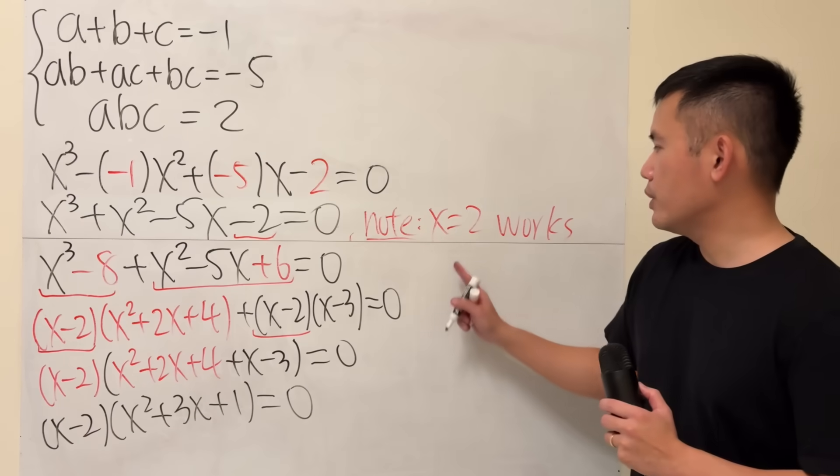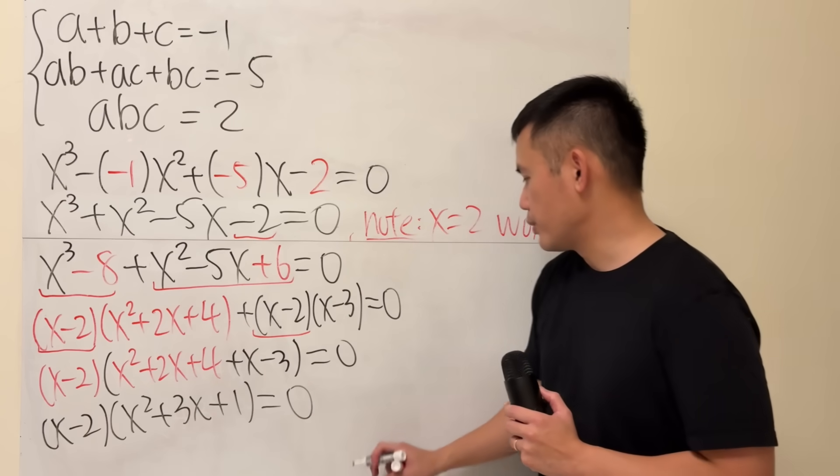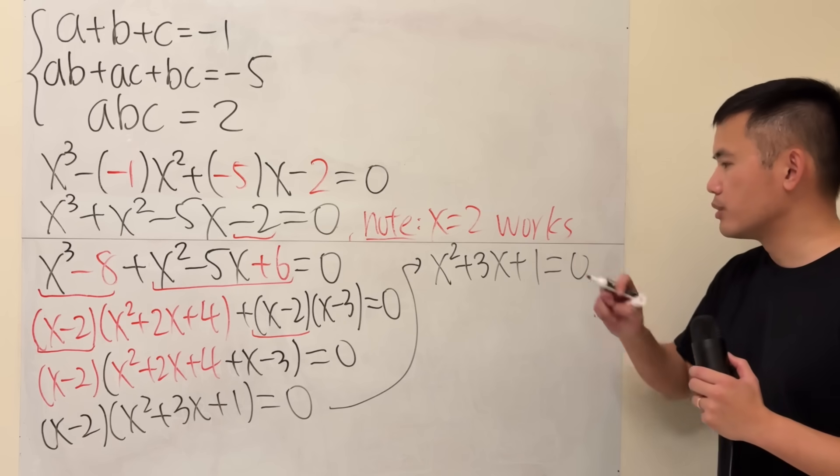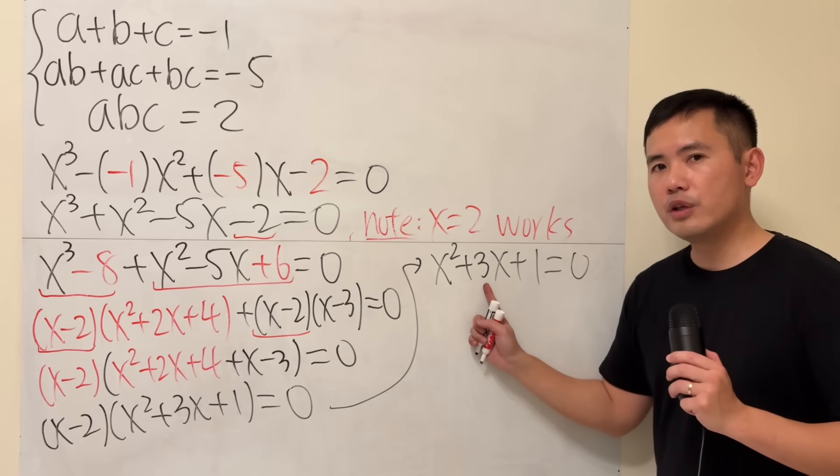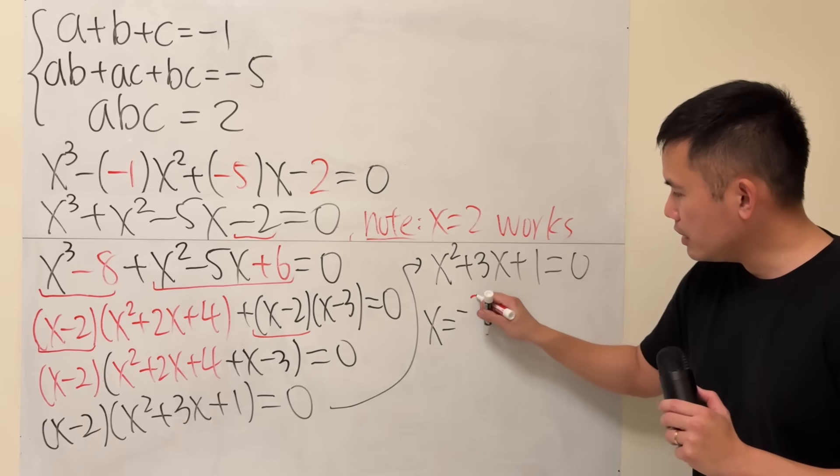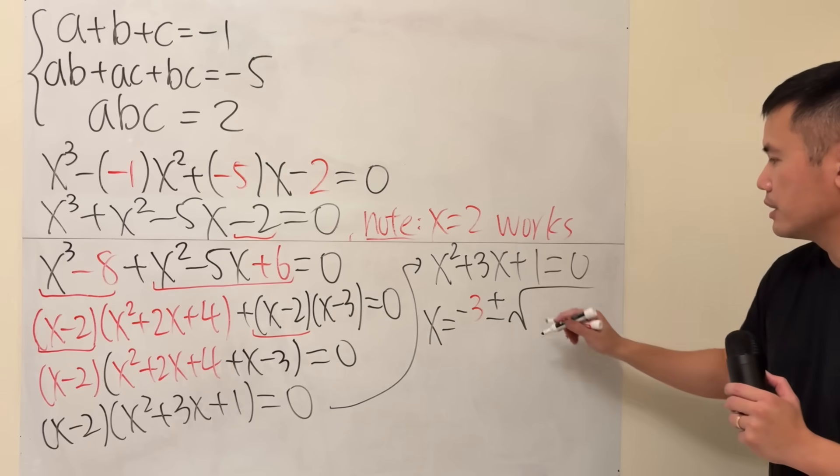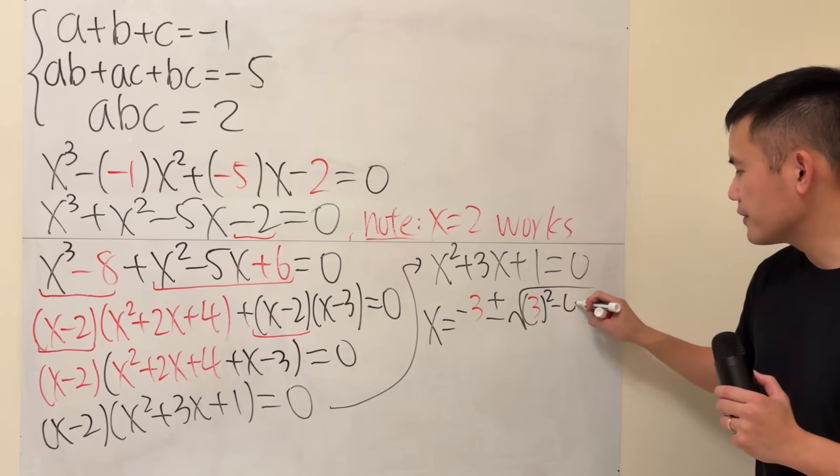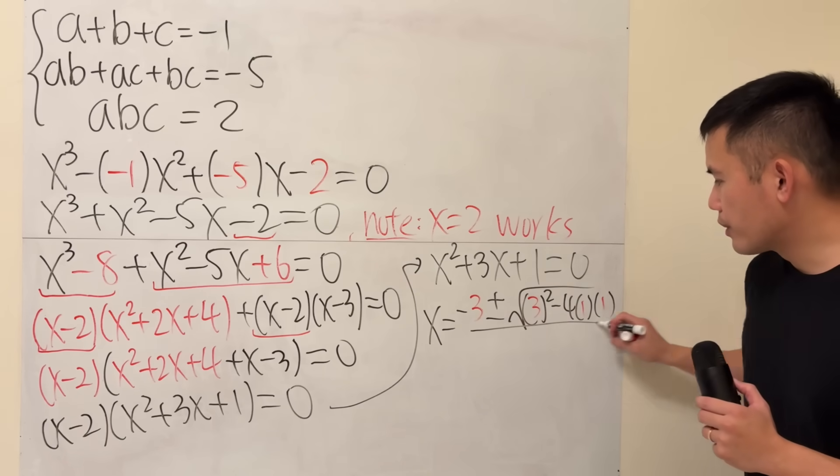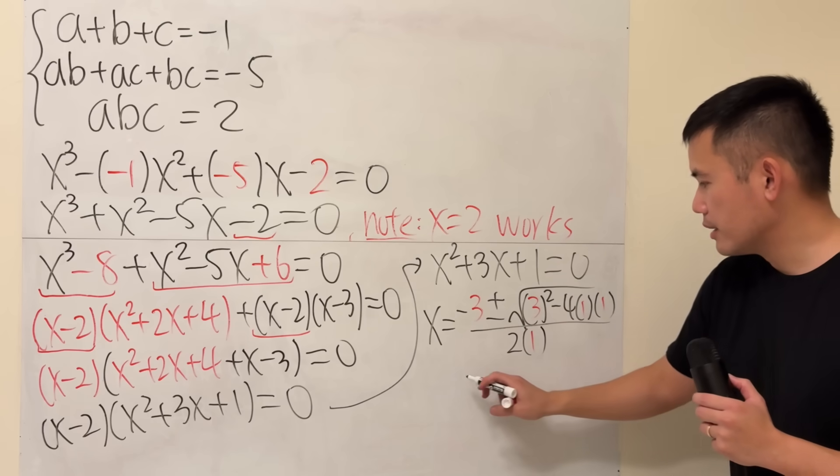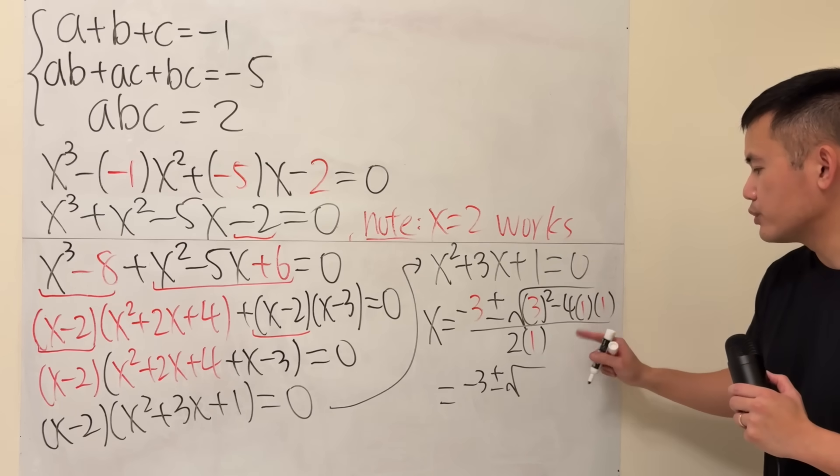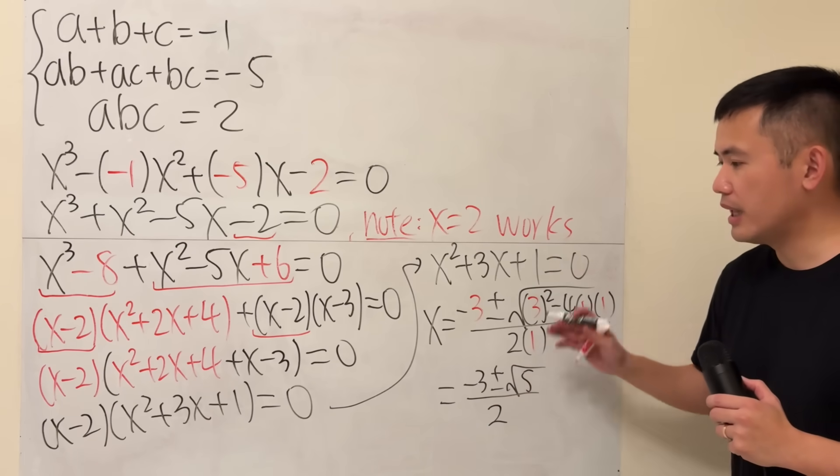X minus 2 equals 0. We have that already. So we just have to solve this right here. So X squared plus 3X plus 1 is equal to 0. And because the coefficient of X is an odd number, I will just do the quadratic formula. X will be negative B, which is 3, plus or minus square root, B squared, minus 4AC, A is 1, C is 1, all over 2A is 1. And we will get negative 3 plus or minus square root of 9 minus 4, which is 5, over 2.